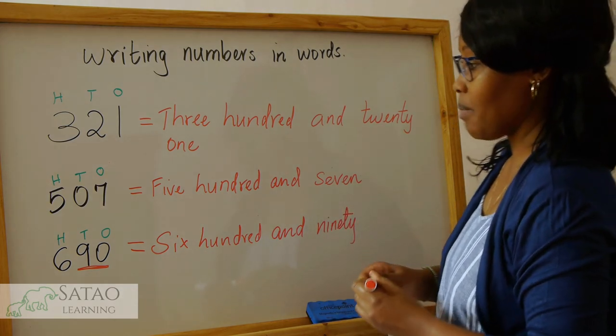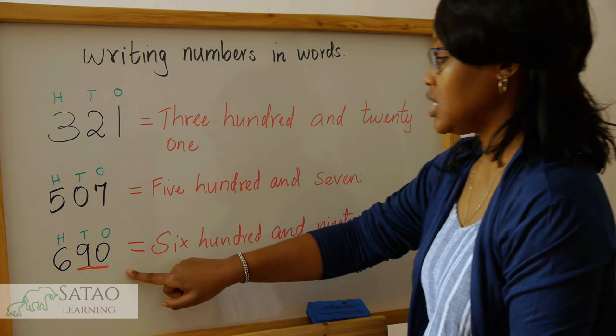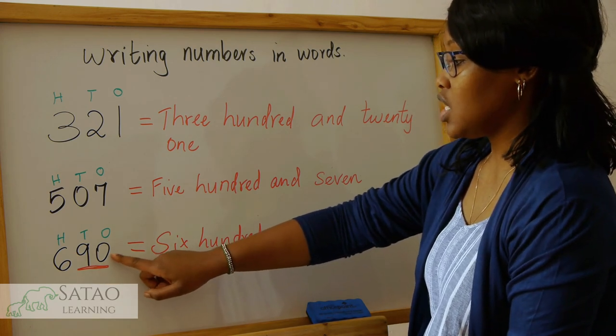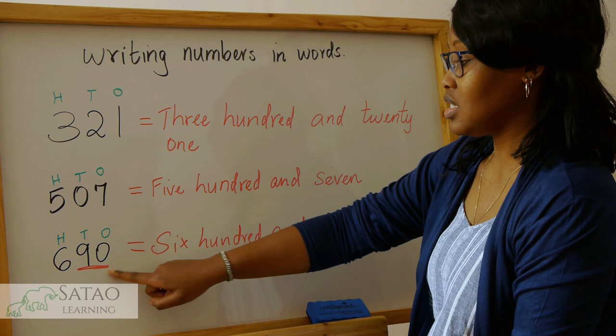Okay, so that number will be six hundred and ninety. In this case, the zero here tells us that this is 90.